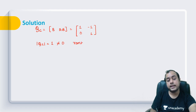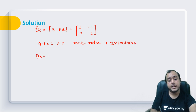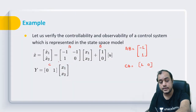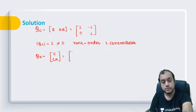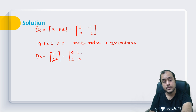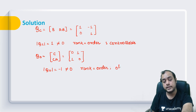The determinant of Qc is 1 — non-zero. When the determinant of a matrix is non-zero, the rank equals the order, so the system is controllable. For the observability matrix [C; CA] = [[0,1],[1,0]], the determinant of Q₀ is -1 — again non-zero. Whenever the determinant is non-zero the rank equals order, so the system is observable.